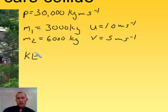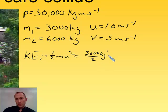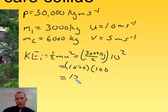Our initial kinetic energy: one half mu squared. So we have 3,000 over 2 times 10 squared. And so that gives us 1,500 times 100. So that gives us a kinetic energy of 150 kilojoules or 150,000 joules.